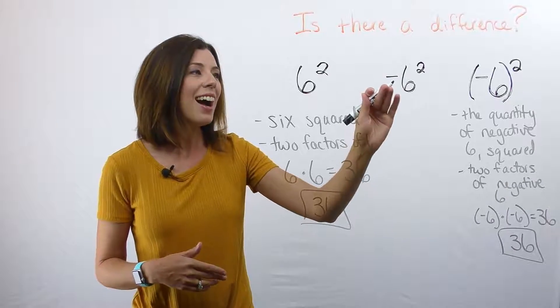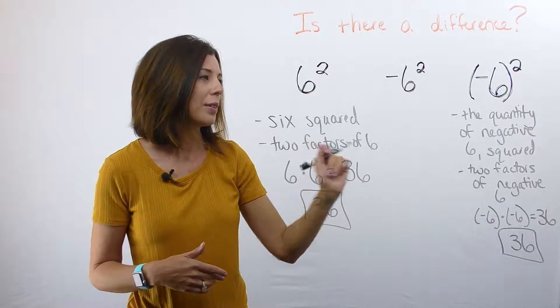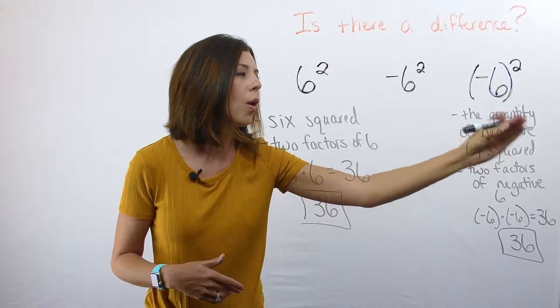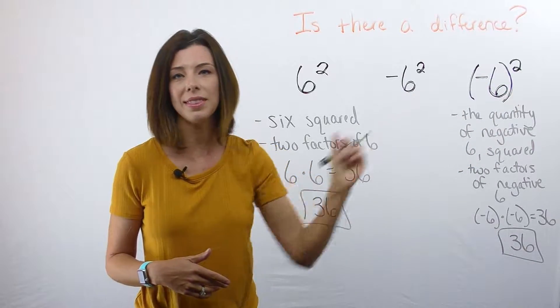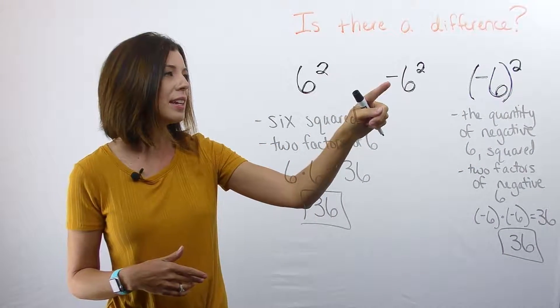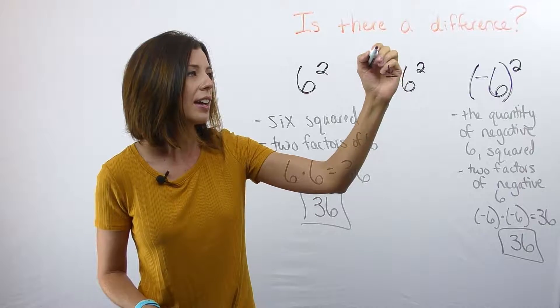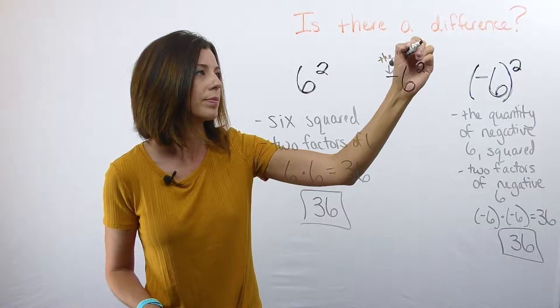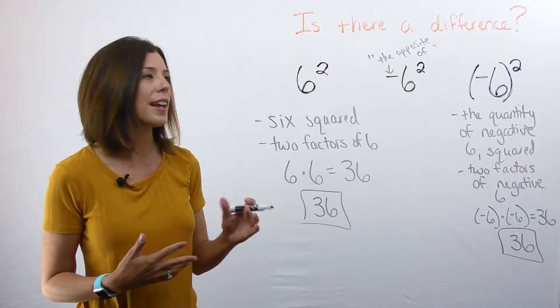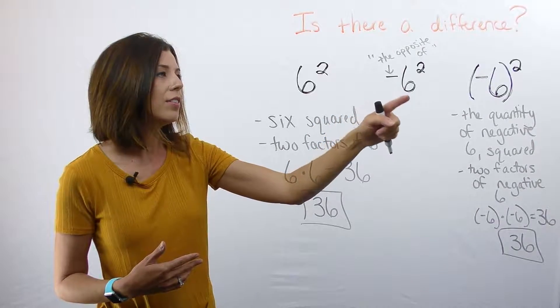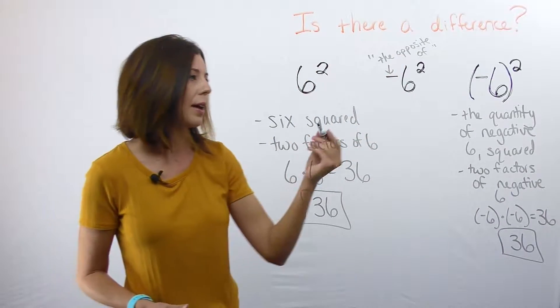This is not negative six squared. Because again, this was the quantity of negative six squared. That's what this one is. So let's instead read this negative as the opposite of. I can read this in words as the opposite of six squared. Let's write that.